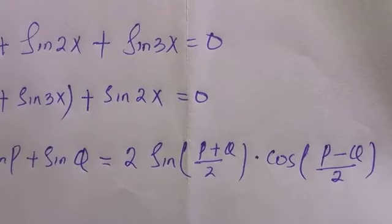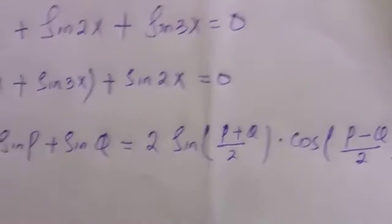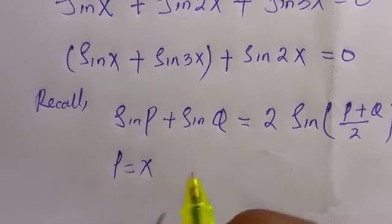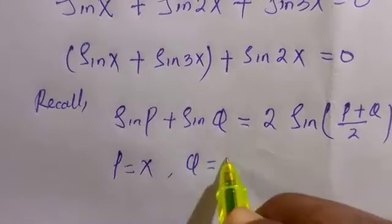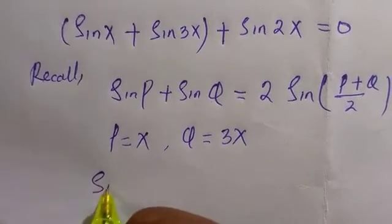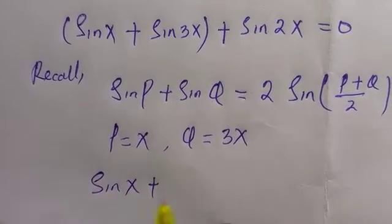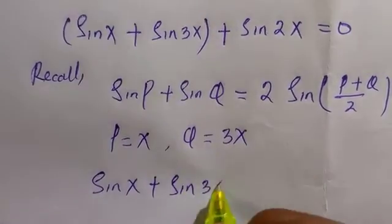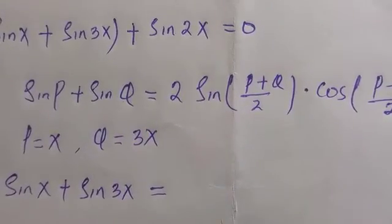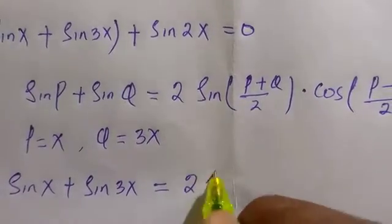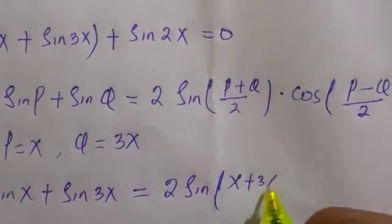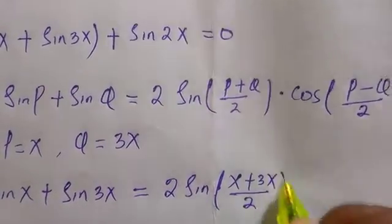Since our x is p and 3x is q, we replace them in the formula we have above as the identity. Therefore, sin(x) + sin(3x) = 2sin((x+3x)/2) × cos((x-3x)/2).